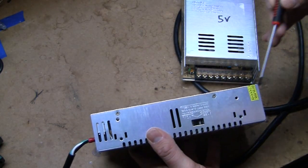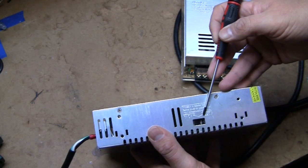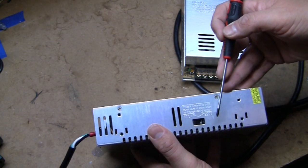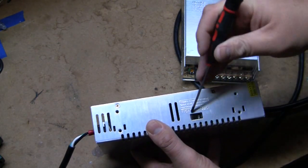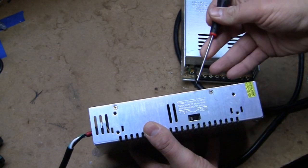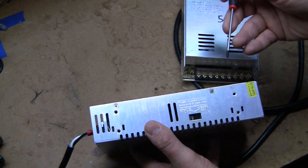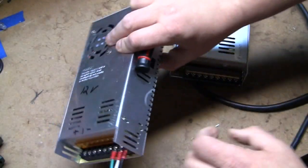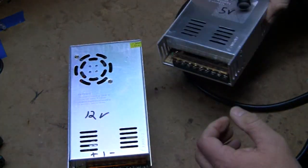Most power supplies have a switch to select the house voltage that you're running under. In the United States, it's 110 volts. If you're in Europe, you slide this over because they use 220 volts. Some power supplies don't have a switch.